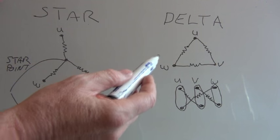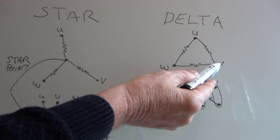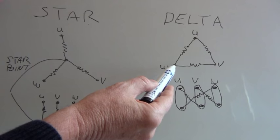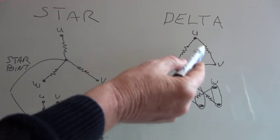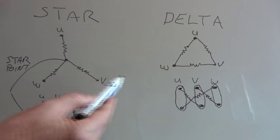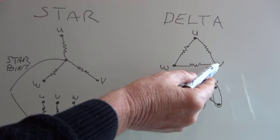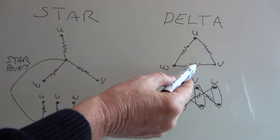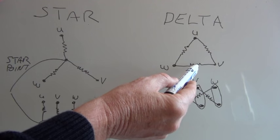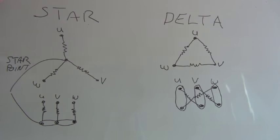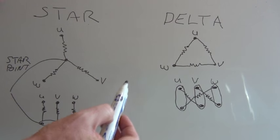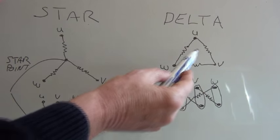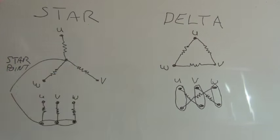If we're doing the test on the delta configuration, we can check between U and V, V and W, and then U and W. But bear in mind that this configuration is different to the star configuration. If we are checking between U and V, then we've also got this and this resistance connected in series but also connected in parallel with that. You would get the same reading across U and V, V and W, and U and W, but if you wanted to calculate it, you would have to use a series and a parallel circuit calculation.